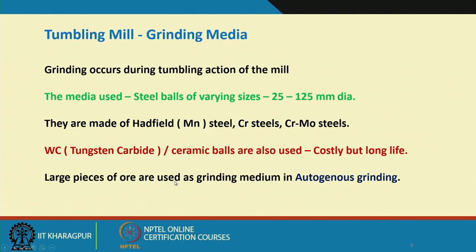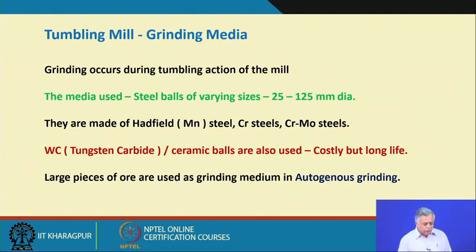Large pieces of ore are also used as grinding medium — we call it autogenous grinding. Here, a larger particle breaks smaller particles to much finer sizes. When we have a wide size distribution — say 50 millimeter particles and also 1 millimeter particles — rotating them causes the 50 mm particle to hit and break the 1 mm particle. Even the 50 mm particles may be broken to finer sizes through repeated rotation. We do not use any artificial media; bigger particles grind the smaller ones, generating much finer particles.